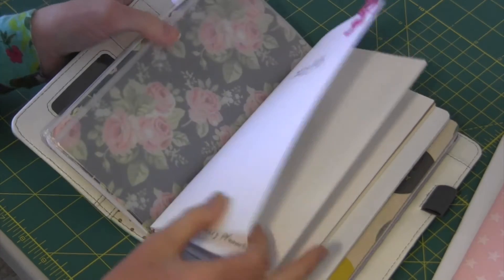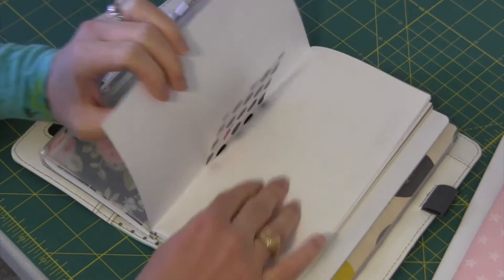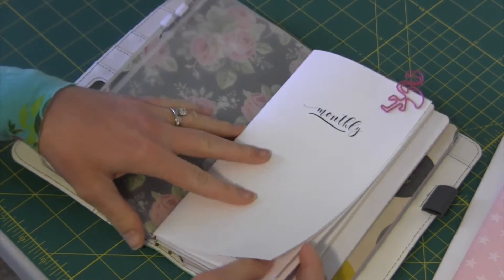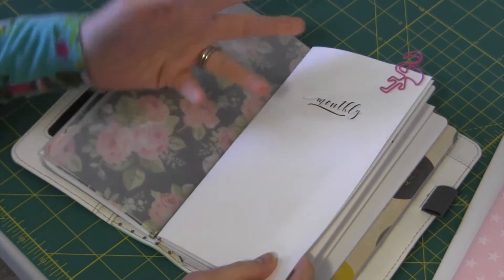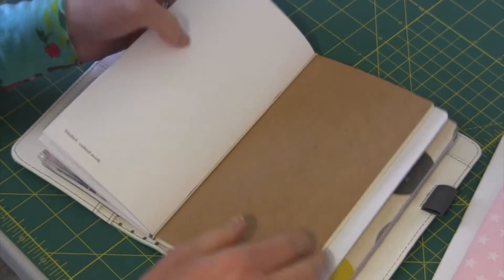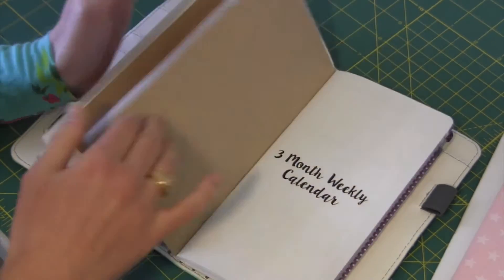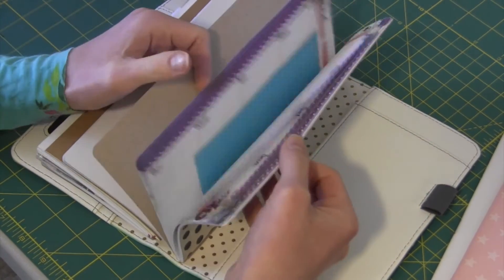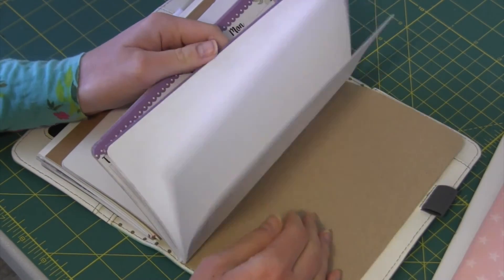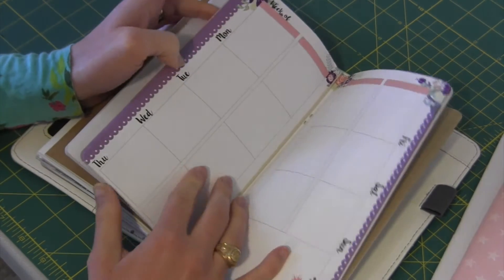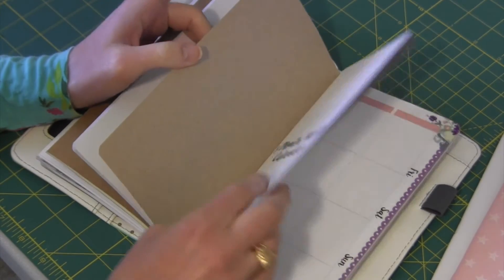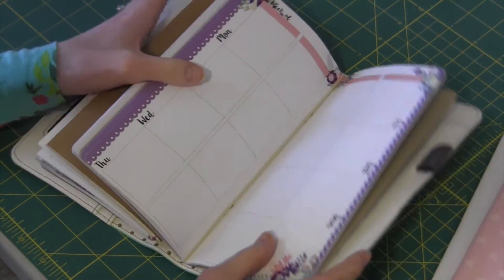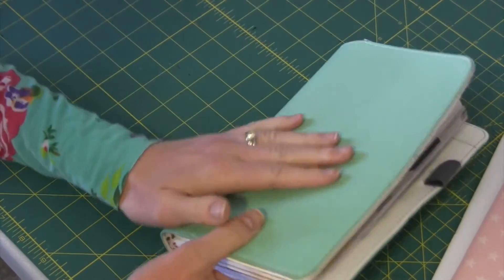So I've gotten some traveler's notebooks inserts from Webster's Pages. I've gotten some from, like I said this is from 1407 Planners and their paper quality is amazing. I will probably be buying from them from here on out. This one's from Webster's Pages. This one is from the Paper Penguin Co. The only reason why I haven't ordered more from her is that she has more decorative spreads and I like everything just kind of plain Jane so that I can decorate.